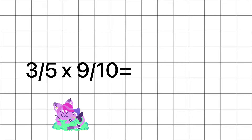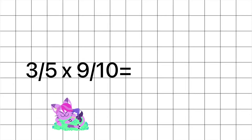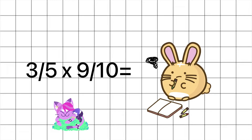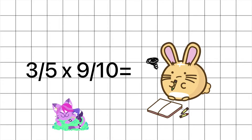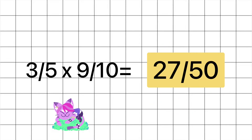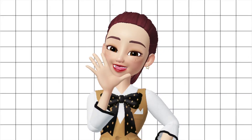Now, try answering this. Multiply three-fifths times nine-tenths. The answer is correct! Twenty-seven over fifty. So easy, right, Sinagbabies?